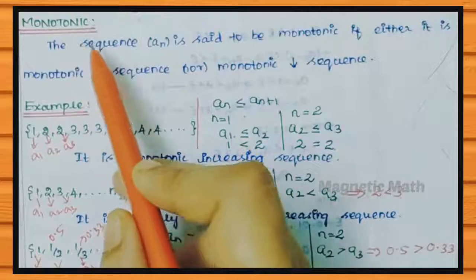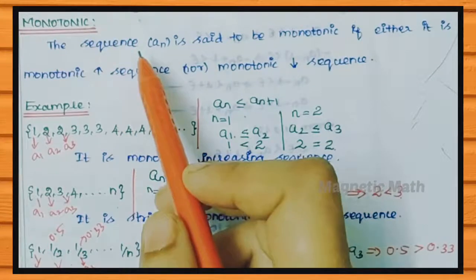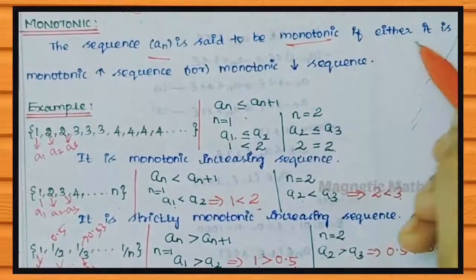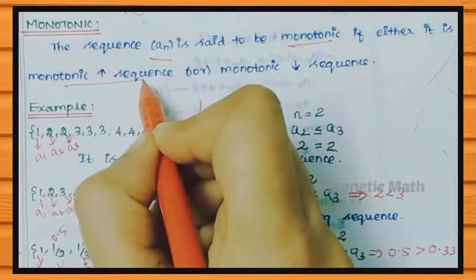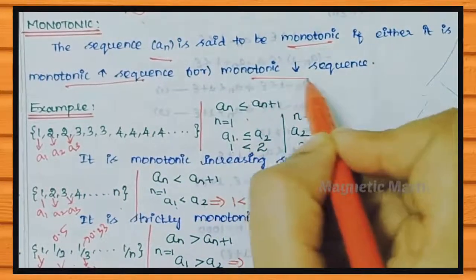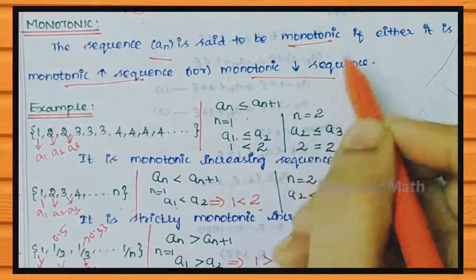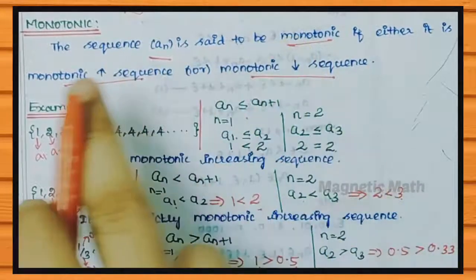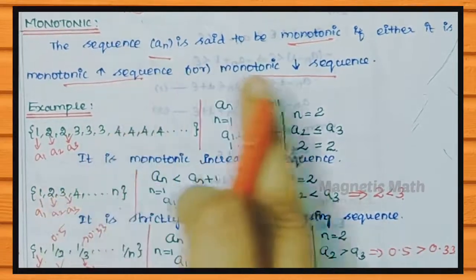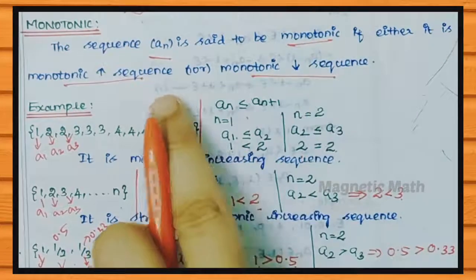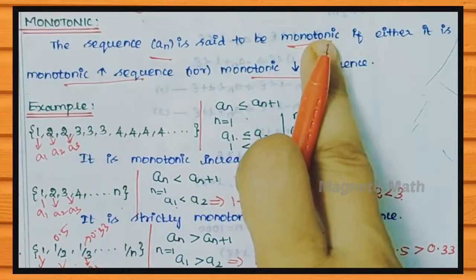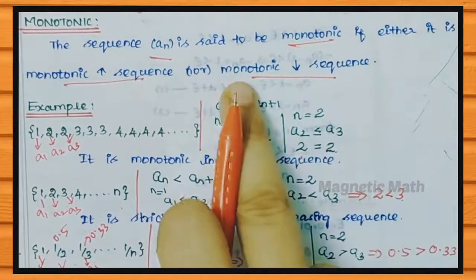A sequence is called Monotonic if it is either an increasing sequence or a decreasing sequence.